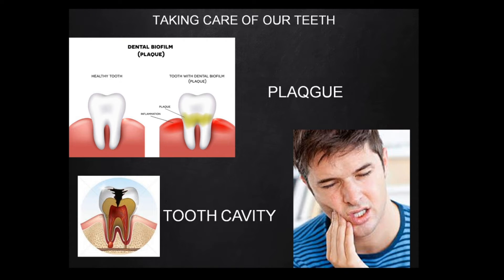These germs change the sugar present in food particles into an acid. This acid attacks the enamel and makes a hole called a cavity. When the cavity reaches the pulp, the tooth starts to pain. Tooth decay results in bad breath, toothache, and indigestion.